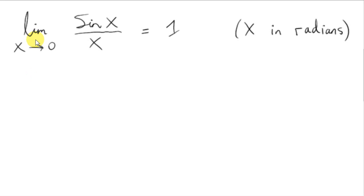We saw in a previous video that the limit as x approaches 0 of sin of x over x is 1, provided x is in radians.